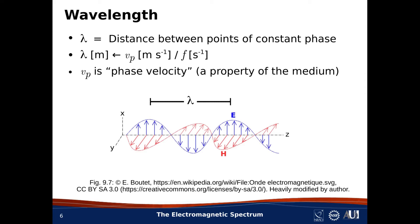Now I could move the two points of observation until I see that I get the same value of the electric field or the magnetic field at both points. The minimum such distance is what we call the wavelength. In other words, wavelength is simply the minimum distance between two points of equal phase. We label this quantity with the Greek letter lambda, so when I say lambda, I mean simply wavelength.